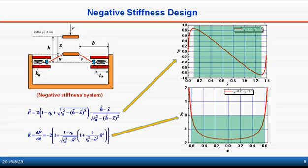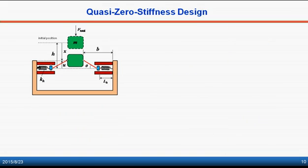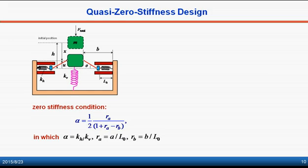Based on the negative stiffness concept, the zero stiffness system can be constructed by adding a positive stiffness spring to the negative stiffness system. When the system parameters are chosen according to the zero stiffness condition, the zero stiffness system is obtained, as shown in this figure.